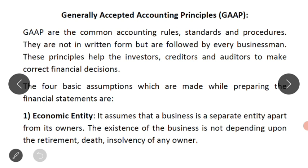They are called as Generally Accepted Accounting Principles. These principles help the investors, creditors and auditors for taking the correct financial decisions. Whenever any investor, creditor, or auditor has to take financial decisions, these Generally Accepted Accounting Principles help them.